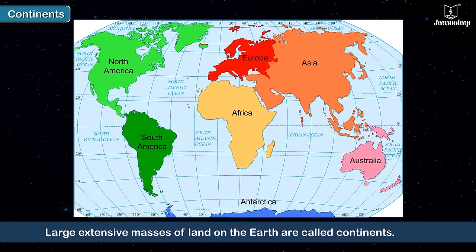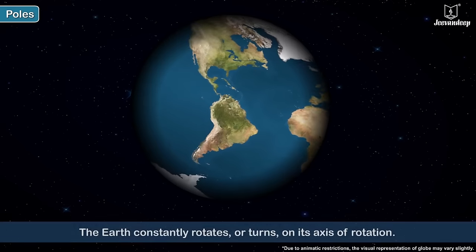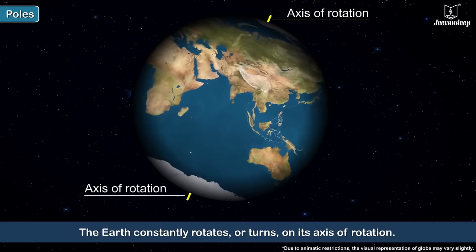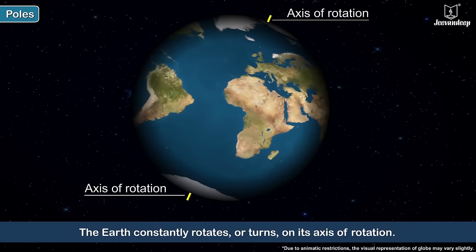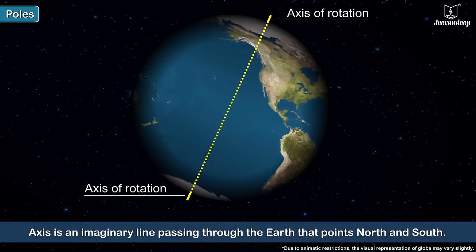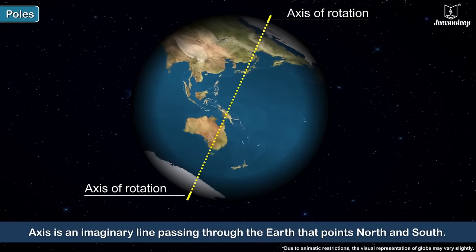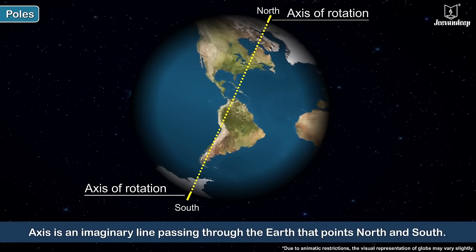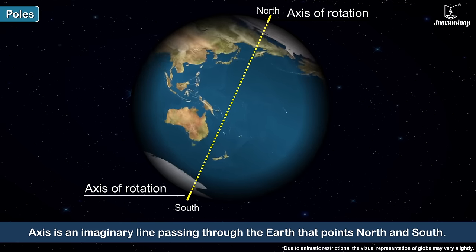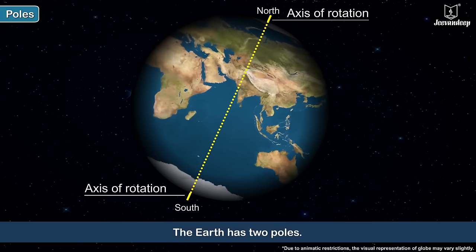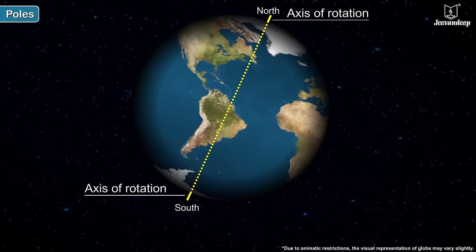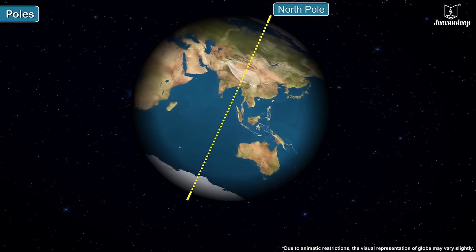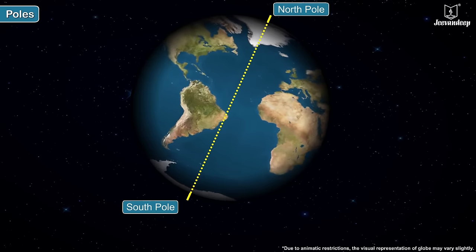The Earth constantly rotates or turns on its axis of rotation. This axis is an imaginary line passing through the Earth that points north and south. The Earth has two poles: the northernmost point is the north pole and the southernmost point is the south pole.